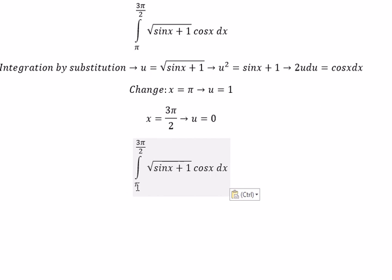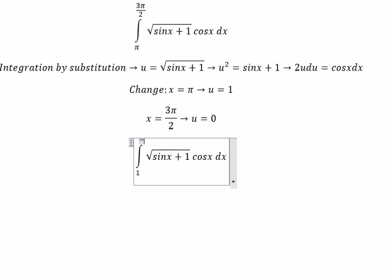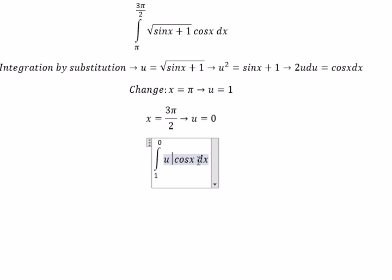So for π, we change to 1. For 3π over 2, we change to 0. We change the variable to u, and cosine x dx becomes 2u du.